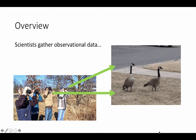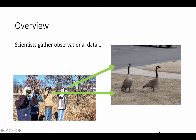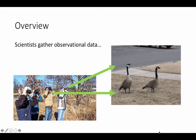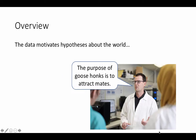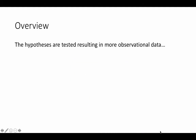Scientists will gather observational data, such as these biologists in the field observing geese. This data motivates hypotheses about the world, such as the hypothesis that the purpose of goose honks is to attract mates. The scientists will then test the hypotheses, and this results in more observational data.